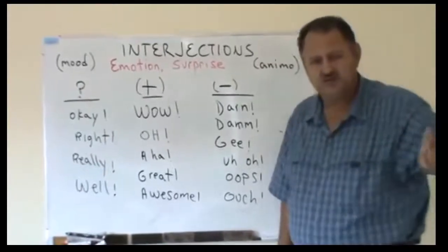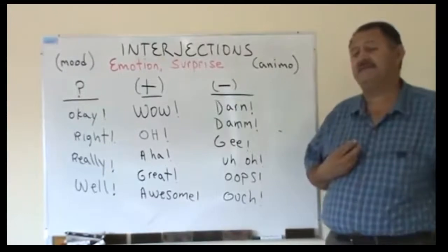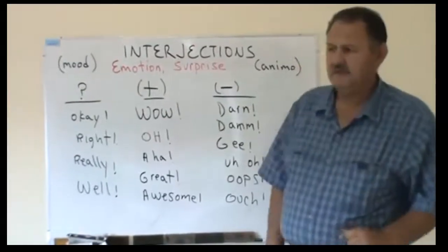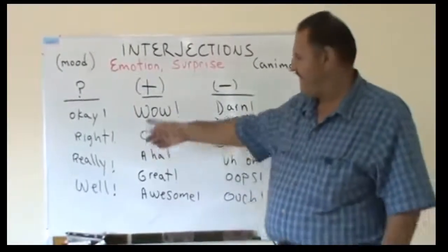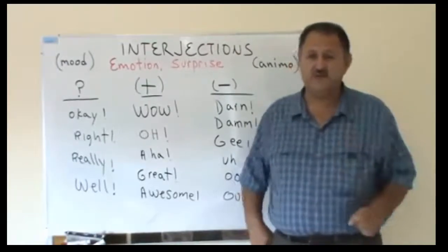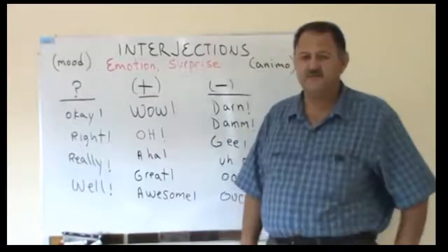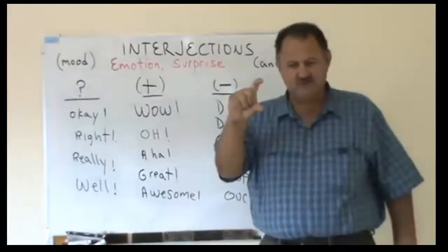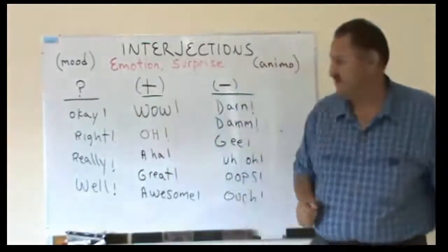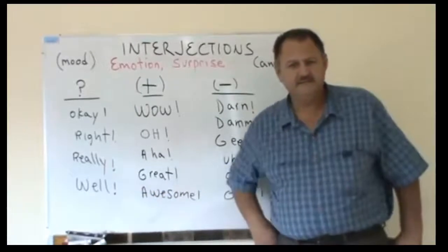There are many interjections — you can go on the internet and search 'interjection list' and you'll find a lot of them. Now, sometimes you can use interjections to express doubt. For example: 'uh, I finished my homework' — okay, you finished your homework, but 'uh-huh' expresses that I'm not really sure about that. 'Right, you finished your homework?' Notice how the interjection expresses doubt and marks the tone of the next expression. 'Really, you finished your homework?' 'Well, you finished your homework.'